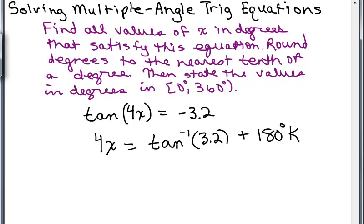Okay, so what do I do from here? I need to divide everything by 4 to solve for X. Keep in mind, again, this tangent inverse of 3.2. That is just something in degrees. Once you plug it in your calculator, it's going to come up to something in terms of degrees. It is an angle.